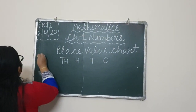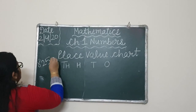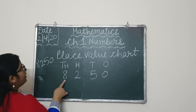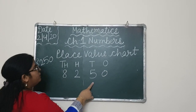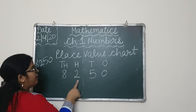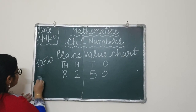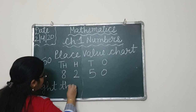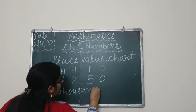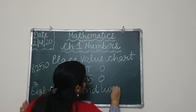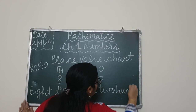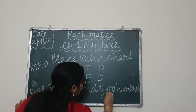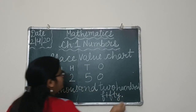We take another number: 8, 2, 5, 0. Zero in the ones place, five in the tens place, two in the hundreds place, and eight in the thousands place. We read it as eight thousand two hundred fifty.